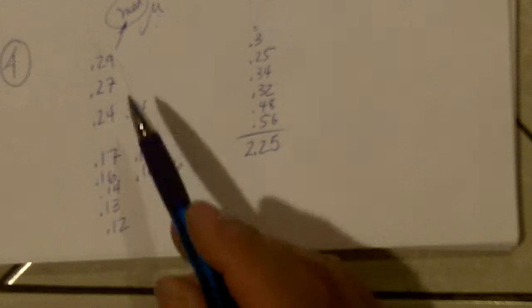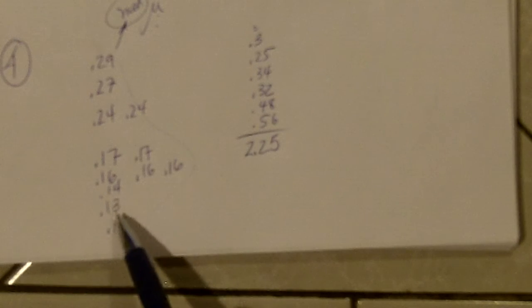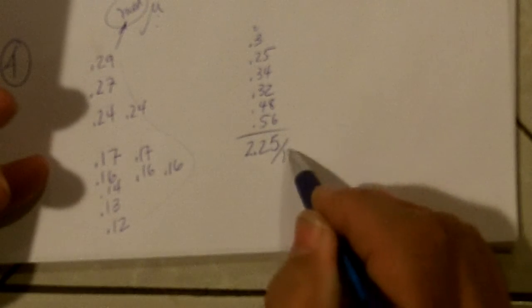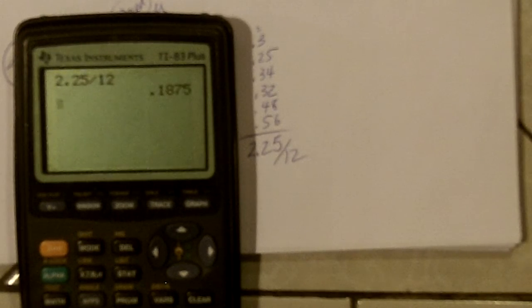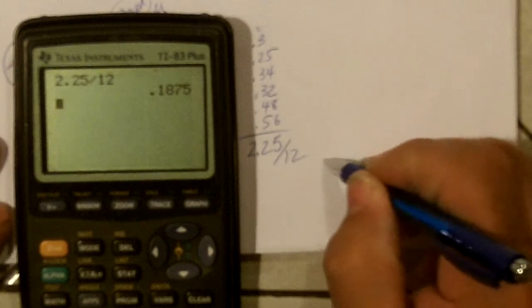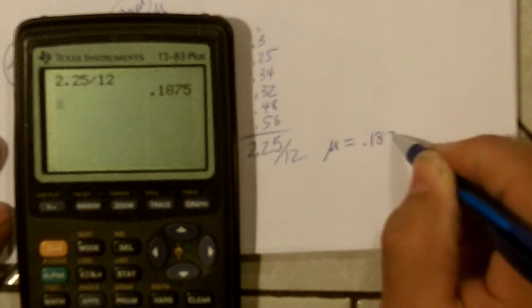And so if I divide that by, let's see, you had 1, 2, 3, 4, 5, 6, 7, 8, 9, 10, 11, 12. Divide that by 12, I will get the mean. So turn on my calculator. Here, 2.25 divided by 12 comes up with a mean of .1875.